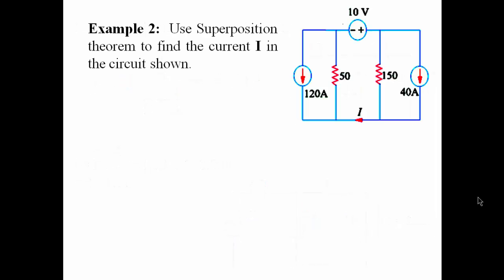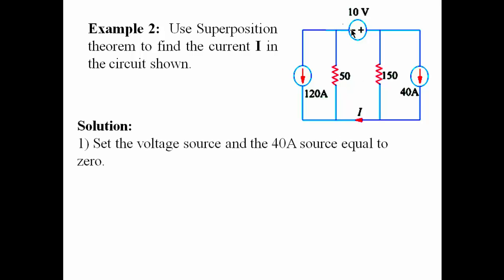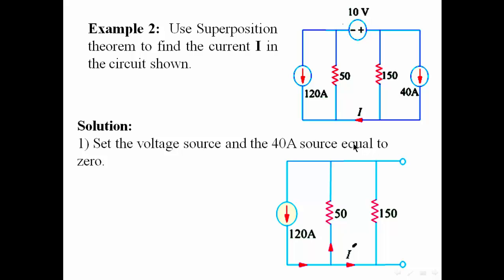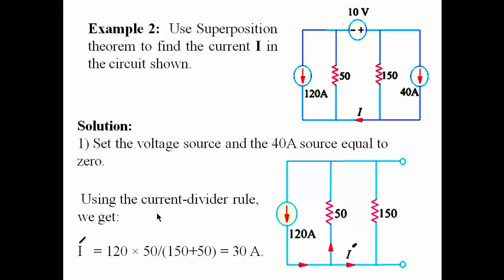Example 2: Use superposition theorem to find the current I in the circuit shown. Similarly, we are going to set the voltage source equal to 0 and the 40 ampere source equal to 0, and we'll just calculate for this source. So this is the voltage source — short circuit — and this is the current source — open circuit. Now we just need to find the current I that results from the 120 amperes source. Using the current divider rule, we get 30 amperes. Notice that the direction of this current is to the right.